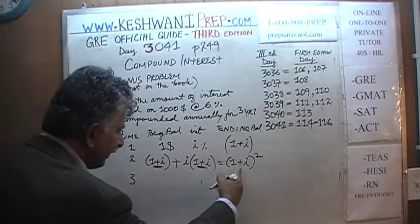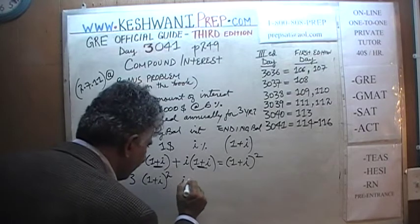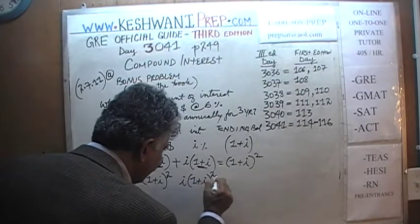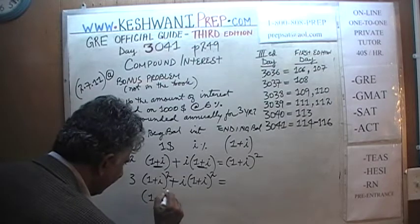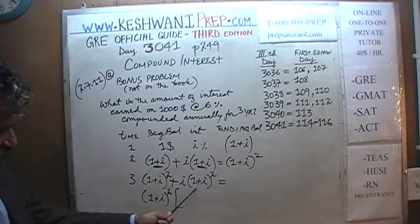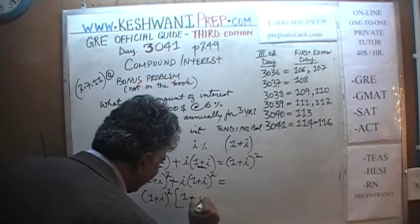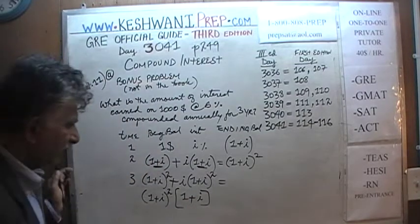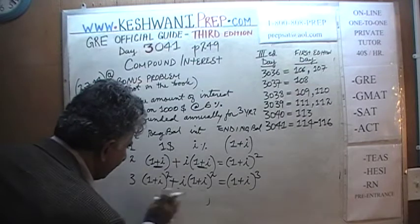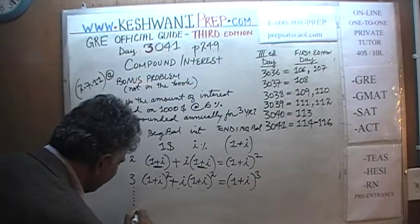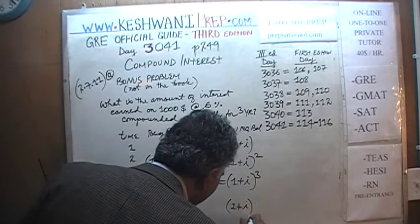At the beginning of the third year, the starting amount is (1 + I) squared. We earn interest on that amount, and taking (1 + I) squared as the common factor, we get (1 + I) squared times (1 + I), which is (1 + I) cubed. If you continue this process for n number of years, at the end of the nth year you will have (1 + I) raised to n.